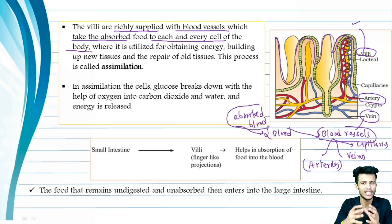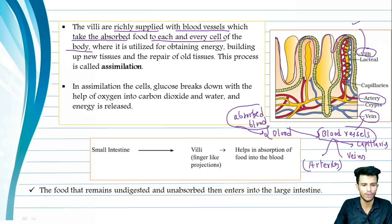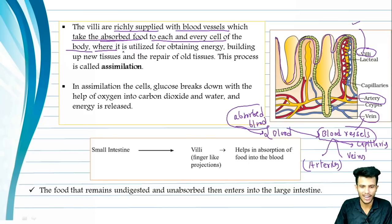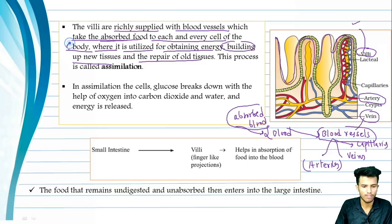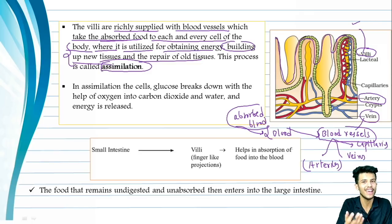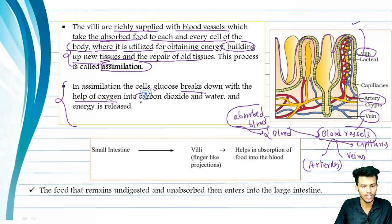The cell then utilizes the food — tissues are repaired and energy is produced. The villi are richly supplied with blood vessels, which absorb food to each and every cell of the body, where it is utilized for obtaining energy, building up new tissues, and repairing old tissues. This task is performed by the process of assimilation. In assimilation, glucose breaks down with the help of oxygen into carbon dioxide and water.